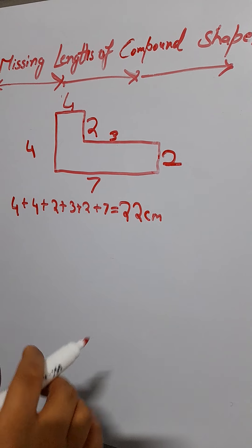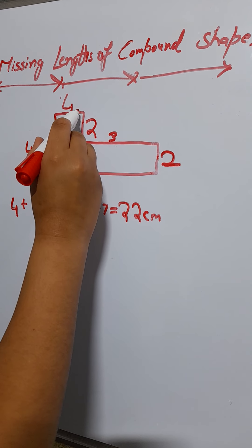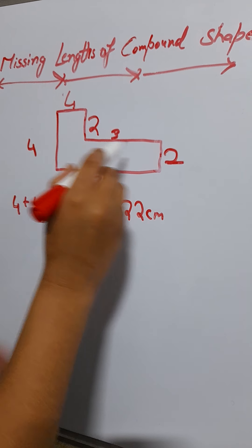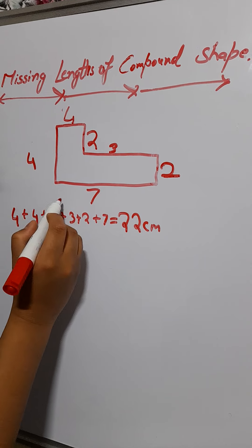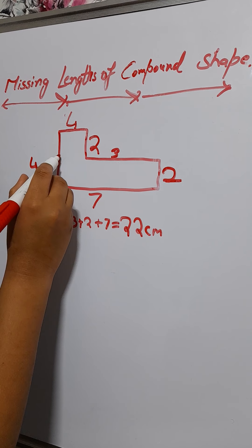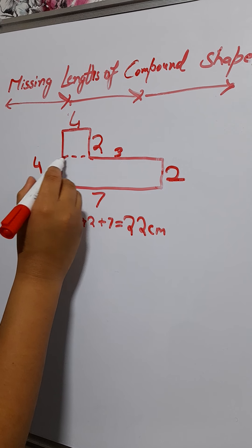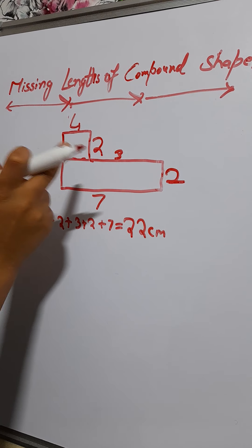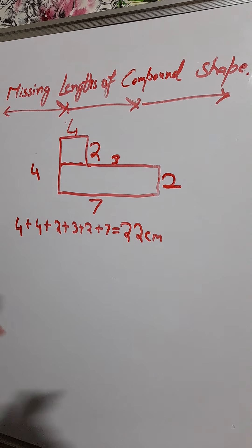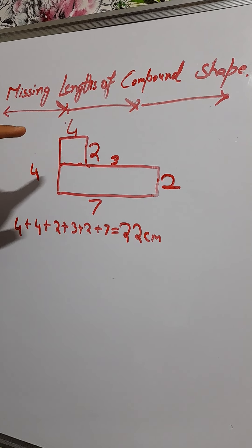If it were a rectangle it would go straight across, but this shape goes down here, so it's not a simple rectangle. What we can do is cut the shape here — splitting it into two separate shapes. A compound shape is two shapes mixed together, so if we find the area of each one we can find the total area.